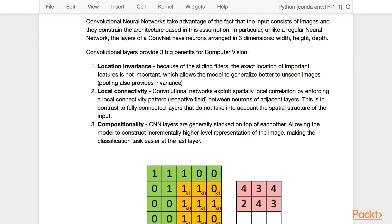Convolutional neural networks take advantage of the fact that the inputs consist of images, and they constrain the architecture based on this assumption. In particular, unlike regular neural networks, the layers of the ConvNet have neurons arranged in three dimensions. Convolutional layers provide three big benefits for computer vision problems.